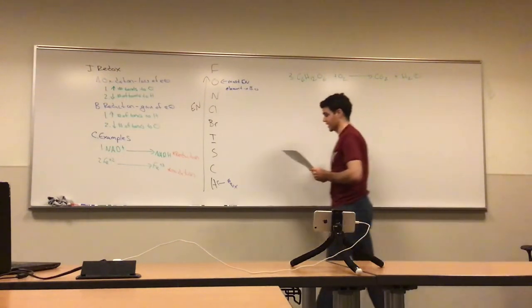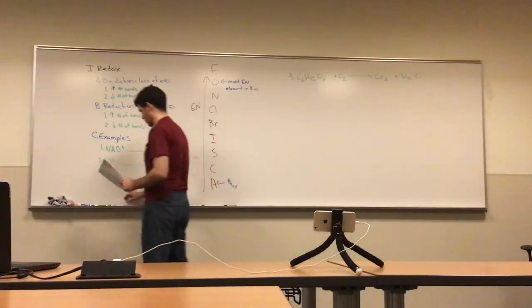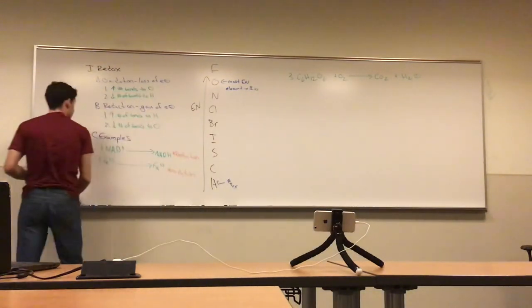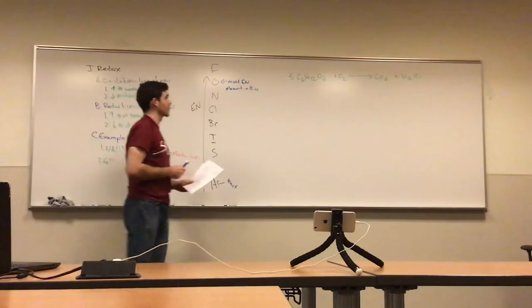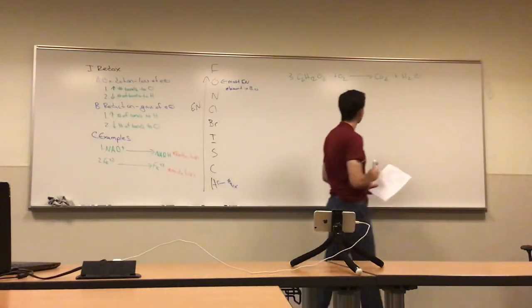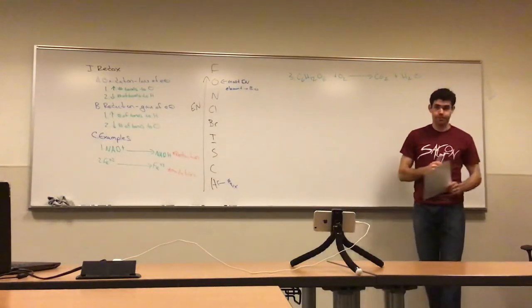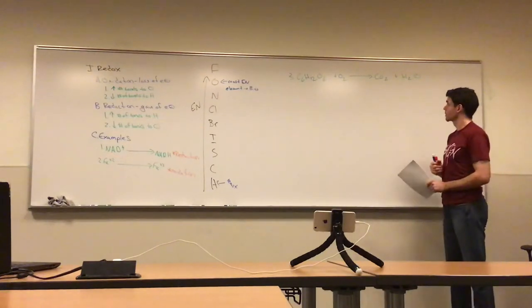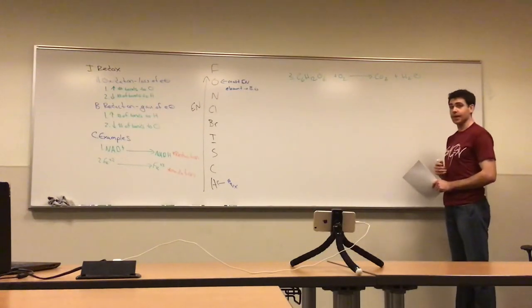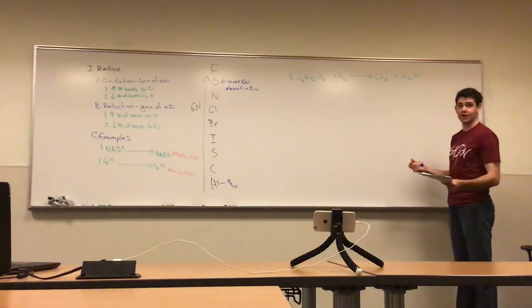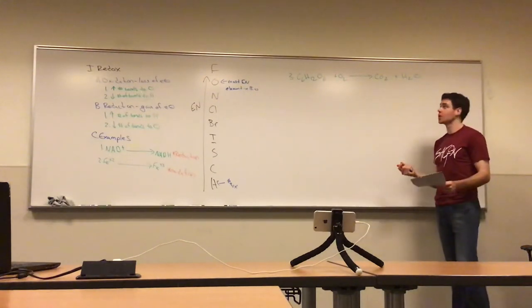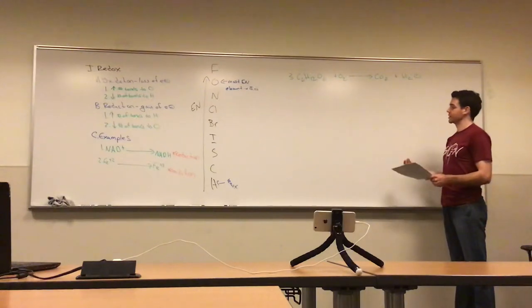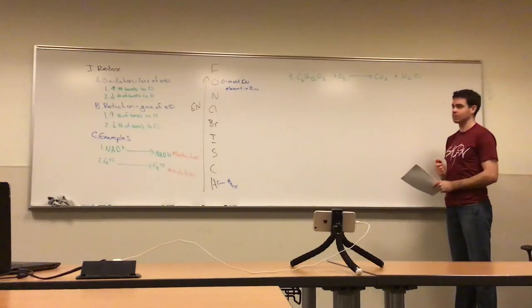Now let's take our third example: C6H12O6 plus O2 goes to CO2 plus H2O. This is cellular respiration. So what is this, an oxidation or reduction? It's both - it's a redox reaction. So something is being oxidized and something else is being reduced.